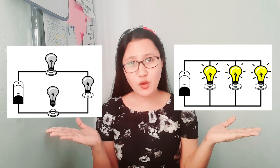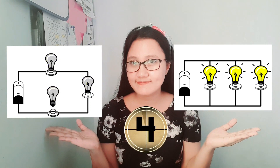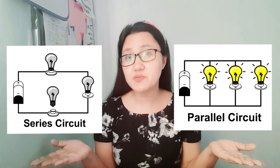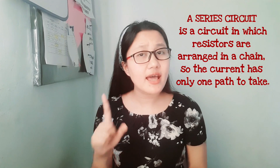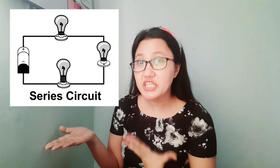I will give you two figures, and I want you to identify which one is a series connection and which one is a parallel connection. This is a series connection and this one is a parallel connection. A series circuit is a circuit in which resistors are arranged in a chain so that current has only one path to take. Think of it like a necklace — there is only a single path where the current flows through.